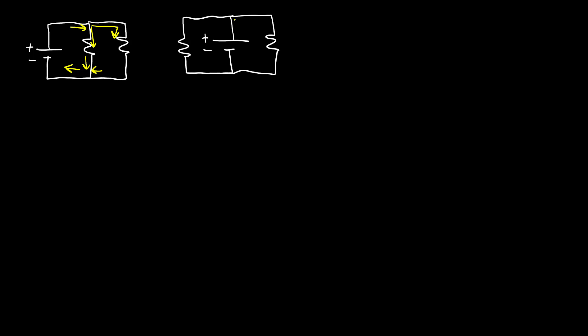And over here in this circuit, it might not look like it, but I actually have the same electrical setup where I have current come from the battery. It then splits, goes through the two resistors separately, and then merges again at this point and goes back up there.